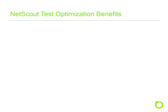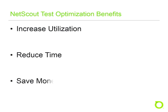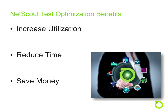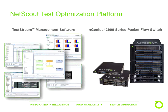This webinar has outlined the drivers, challenges, and keys to success for implementing test lab automation. NetScout's test optimization solutions offer Layer 1 switching with Layer 2 through 4 intelligence, playing a vital role in ensuring that cost drivers are addressed and efficiency is improved through increased utilization of test tools, a reduction in time required to configure and tear down test topologies, and money saved on test tools and infrastructure. Thank you for listening. For more information, please contact your local NetScout account manager or visit www.netscout.com.